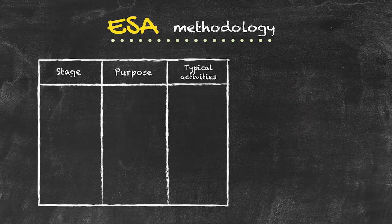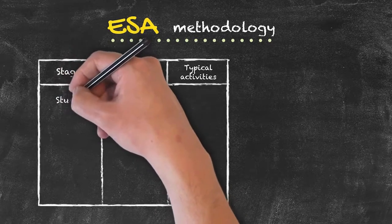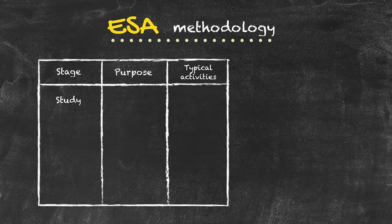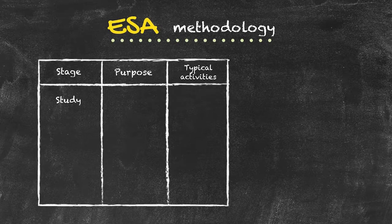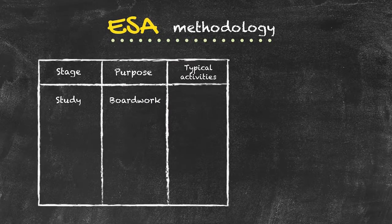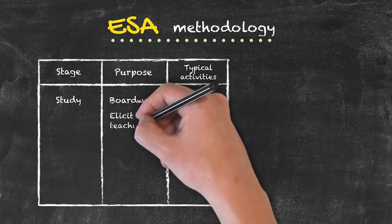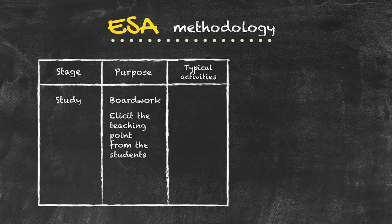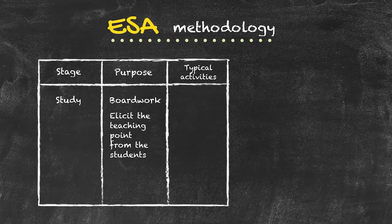The second stage of the lesson is known as the Study phase. The purpose of this phase is to cover the actual teaching of the lesson and to check understanding of that material. Typically in an ESA lesson, the Study phase has two parts. The first is to cover the actual teaching component in what's known as the board work, where we try to elicit — to gain information from the students about the teaching point. This is very different from the normal didactic way of teaching. In the ESA methodology, wherever possible, you are trying to draw information out from the students through a process known as elicitation.